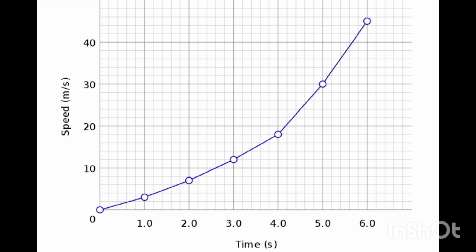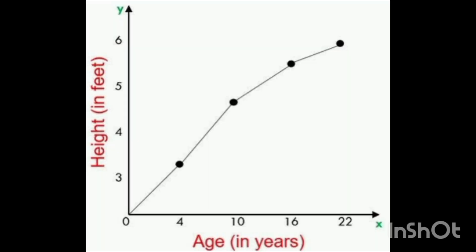Another example: time versus speed — speed is dependent on time, and time is dependent on speed. If there is more speed you go faster, then less time is taken. And age versus height — height is dependent on age.